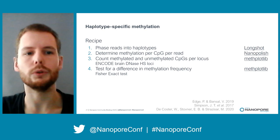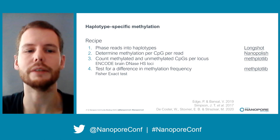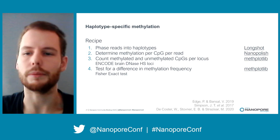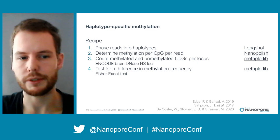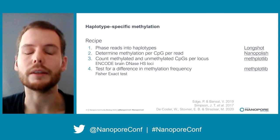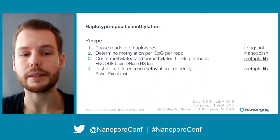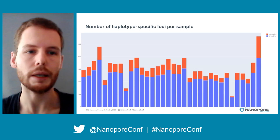So how do I get to haplotype-specific methylation? I start with phasing reads into haplotypes, a feature available in Longshot, the tool we use for calling single nucleotide variants. Then per CpG, per read, the methylation likelihood is determined using Nanopolish, although the same approach could also be used with alternative tools. Then we count the number of methylated and unmethylated CpGs per locus — in my case using an ENCODE brain DNase hypersensitivity annotation dataset. Next is to test for a difference in methylation frequency using Fisher's exact test to compare both haplotypes for the number of methylated and unmethylated CpGs.